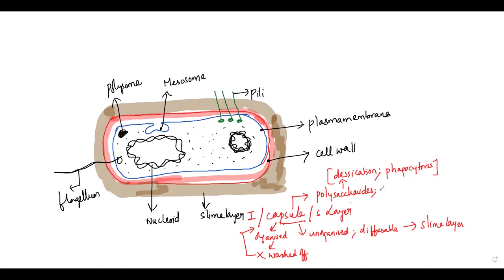Secondly, the capsule may even have some proteins, or proteins clubbed up with sugars, which are called glycoproteins. And these are not only helping from desiccation or phagocytosis, but also helping bacterial cells from pH fluctuations, protecting them from different enzymes in the host body, and even overcoming osmotic stress. So these are the various functions of your capsule, the outermost layer.